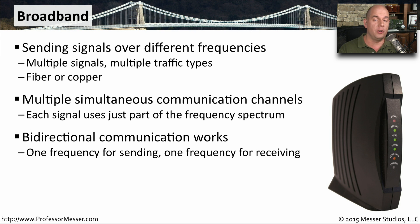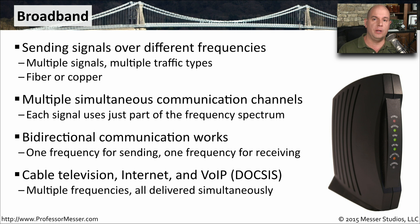Unlike baseband, on a broadband network you can have bi-directional communication, because one frequency may be sending traffic while you're receiving traffic on a completely different frequency. A good example of a broadband connection is our cable modem and cable internet connectivity. We're receiving television signals, internet signals, and voice over IP all simultaneously over this very robust broadband network.